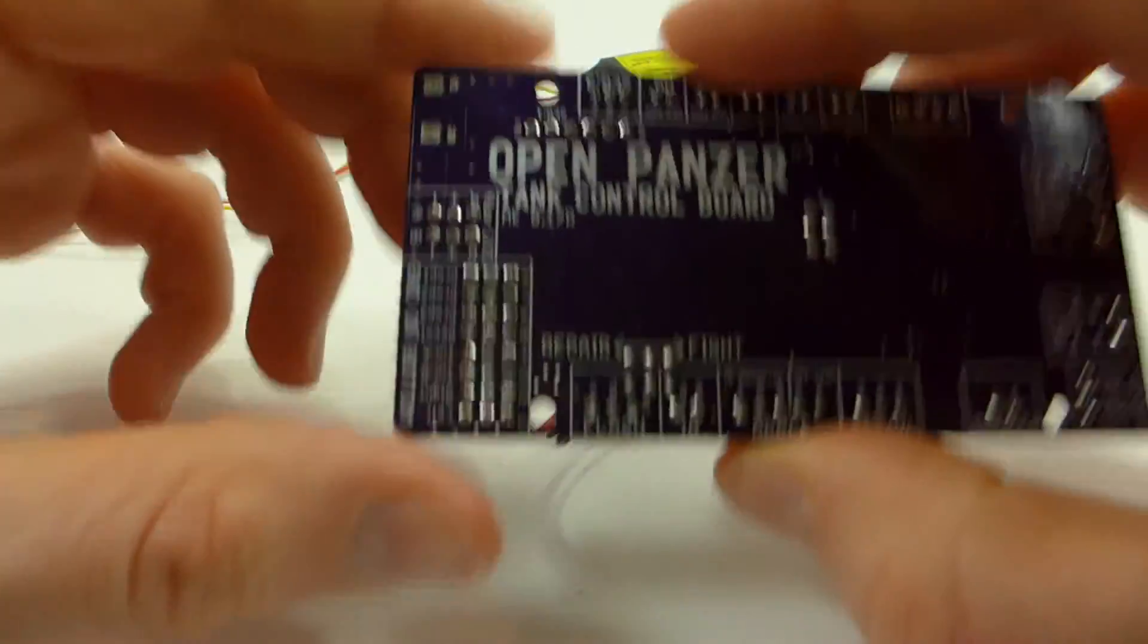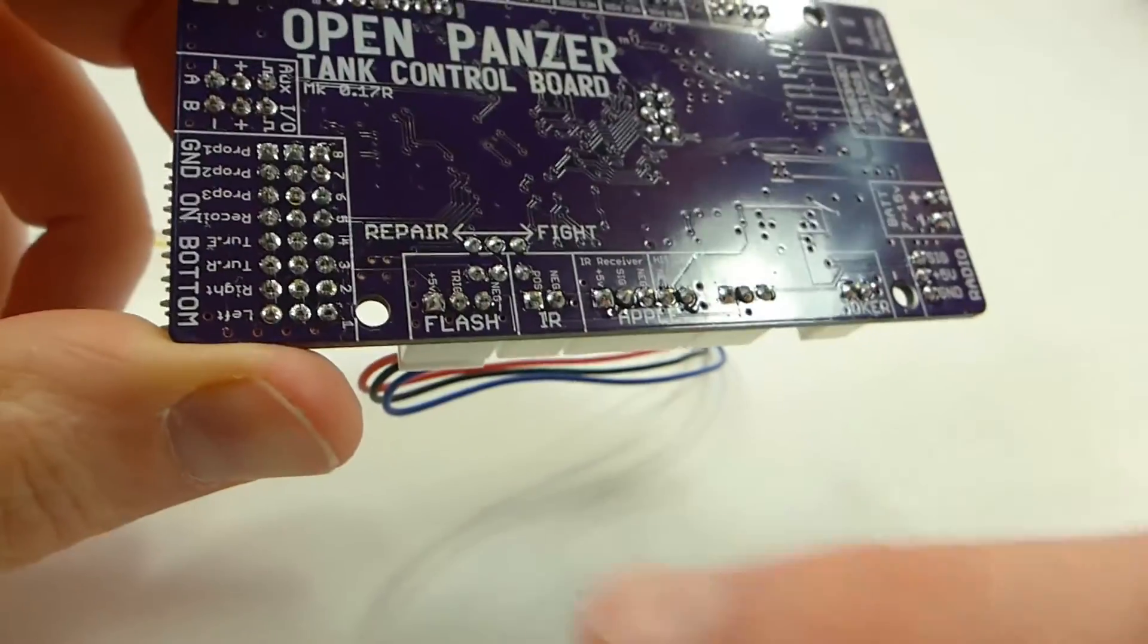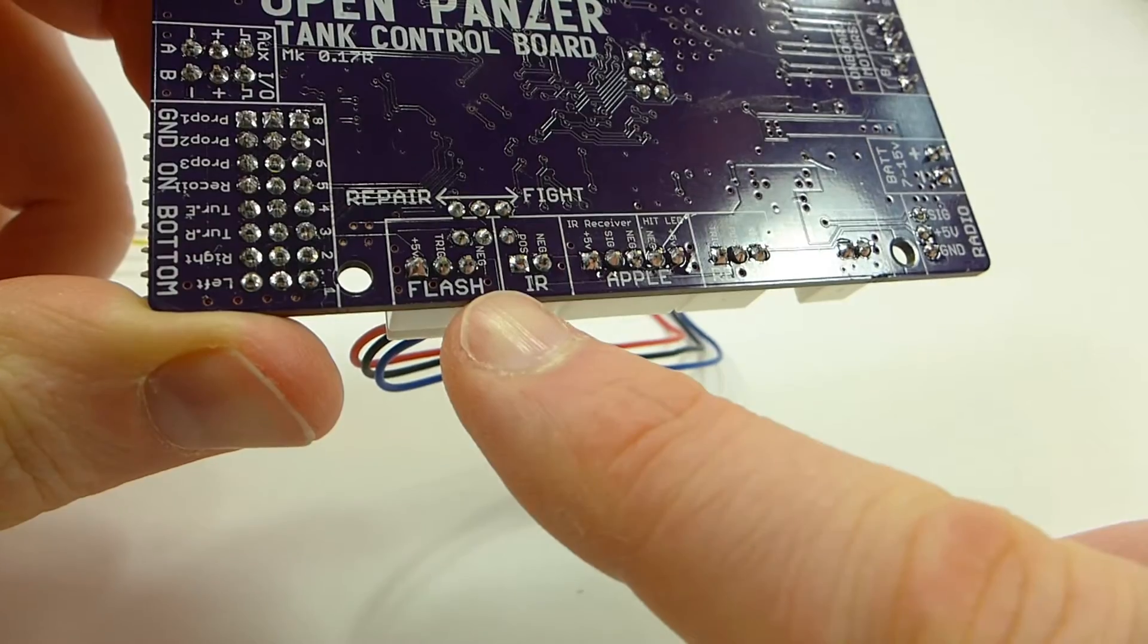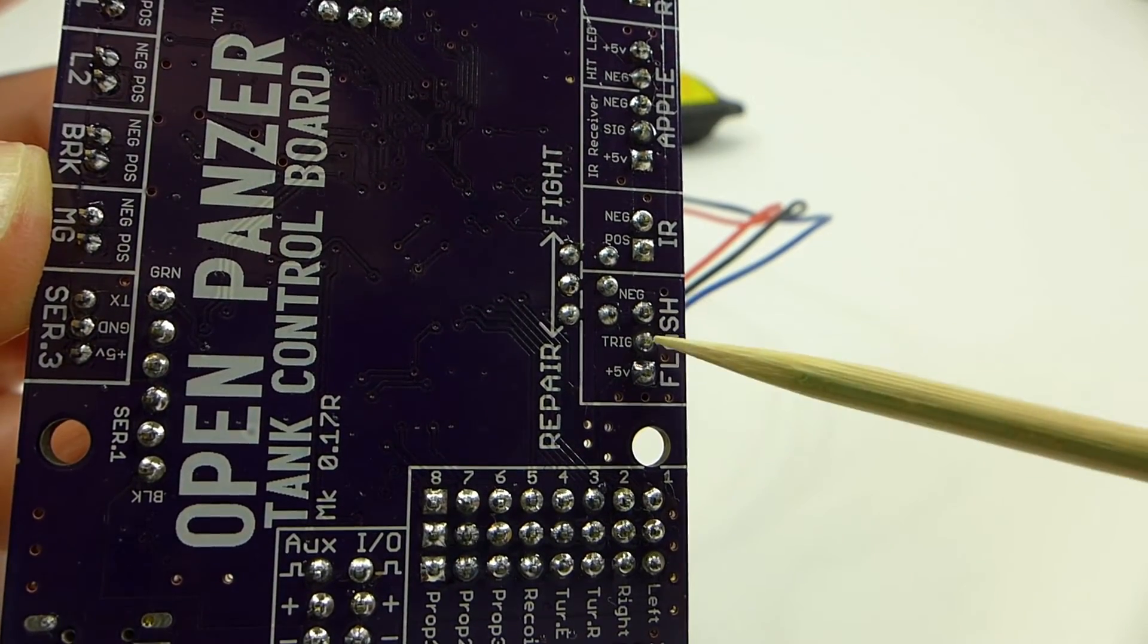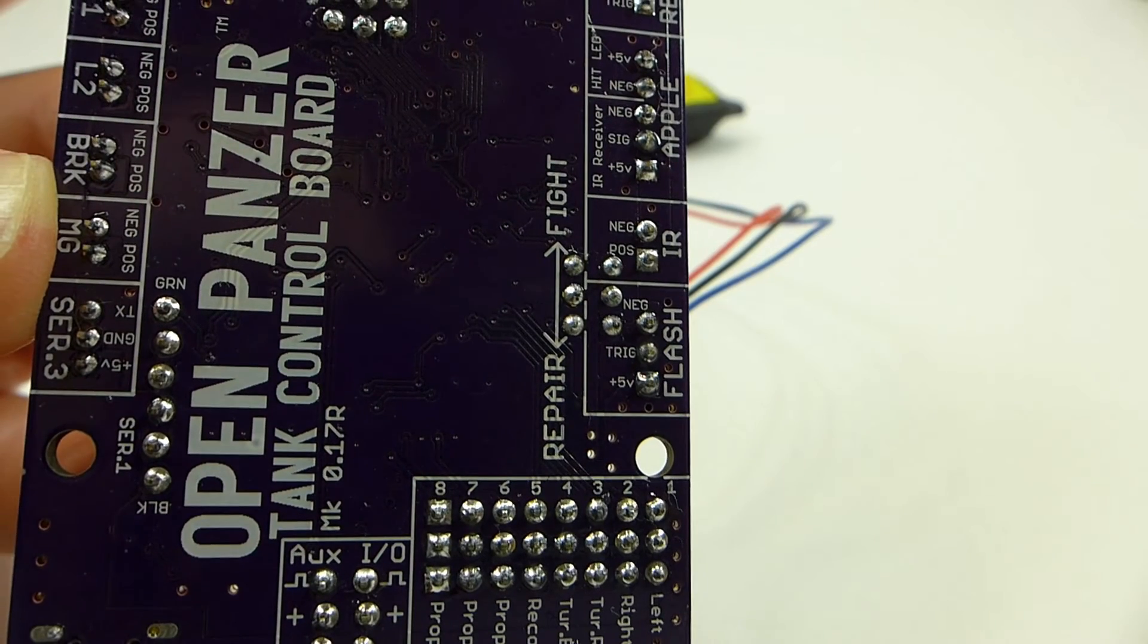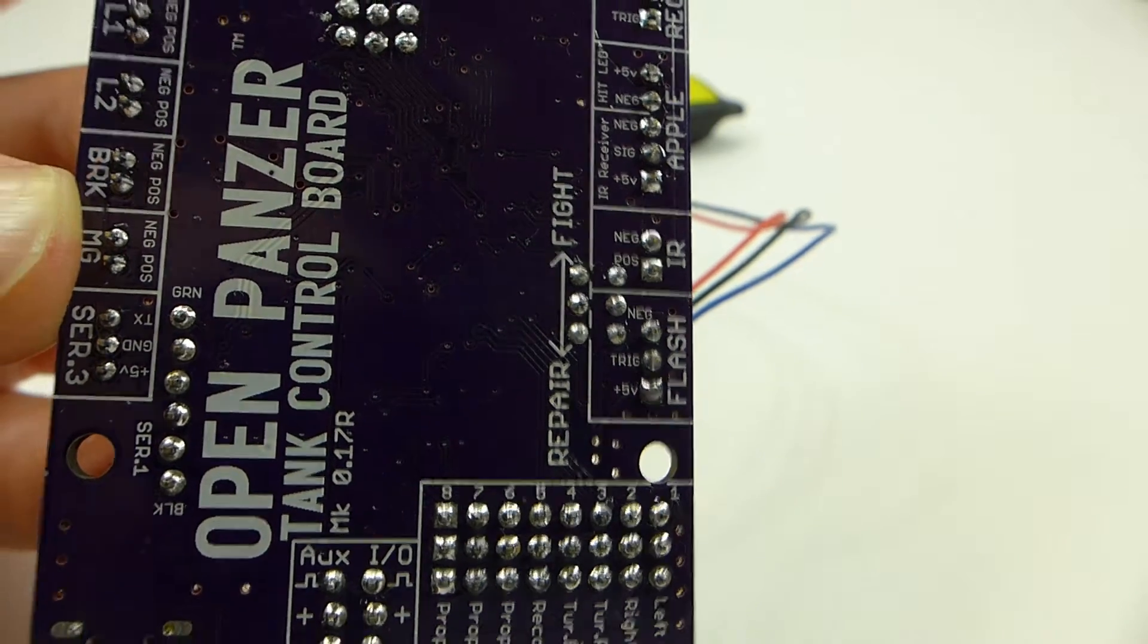If you ever forget which plug goes to where, look at the bottom of the board and everything is printed out there for your information. And in fact every single pin has its function written on the bottom of the board as well.